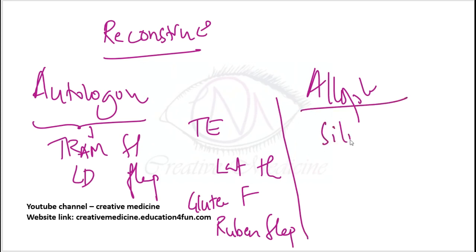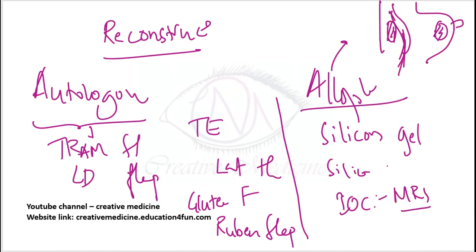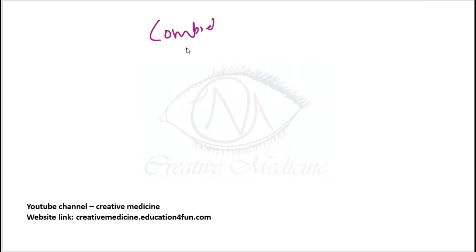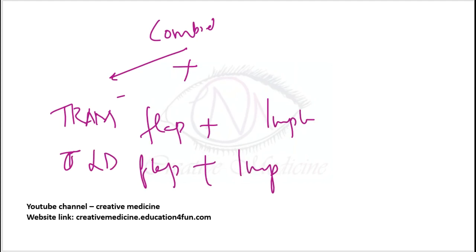Alloplastic reconstruction uses silicone gel implants or silicone implants with saline refill. These can be placed beneath the pectoralis major or beneath the skin. After breast implant placement, MRI should be done to look for recurrences or for screening. Combined implants combine autologous flaps like TRAM flap or latissimus dorsi flap with an implant.